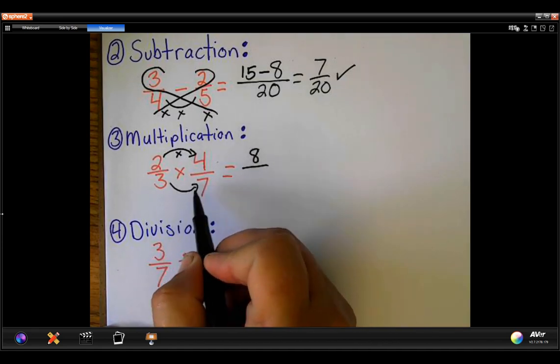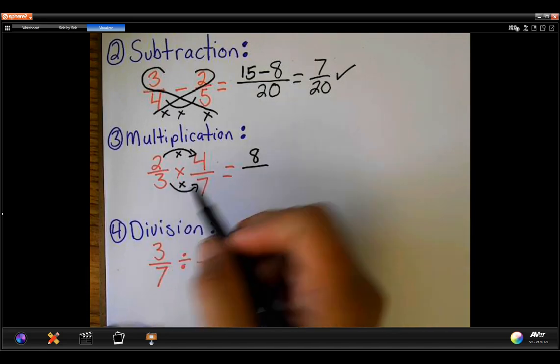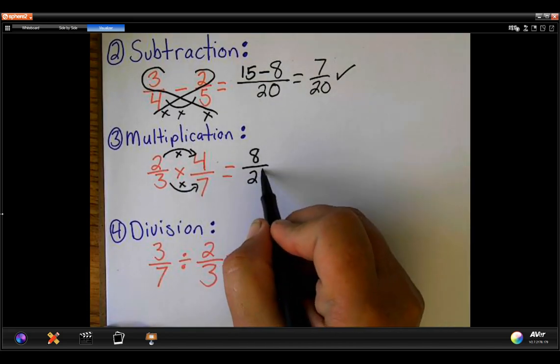Then, you're going to multiply the bottom two numbers. 3 times 7 is 21. Check.